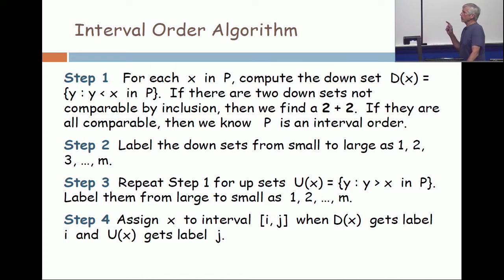Then you have to do step two, and you label the downsets 1 to M. Then you repeat for the upsets, but label them from large to small, 1 to M.